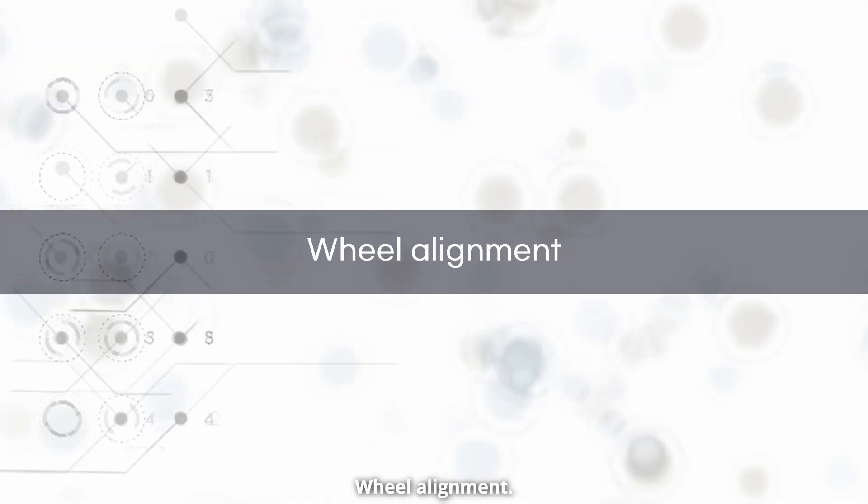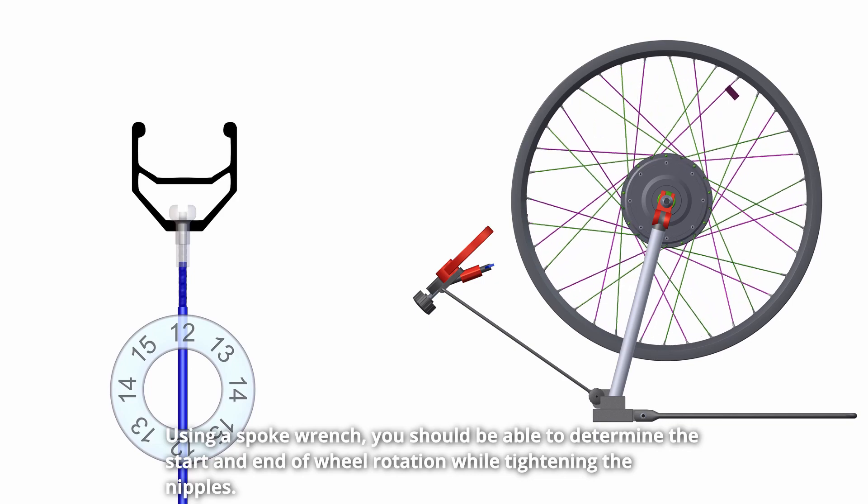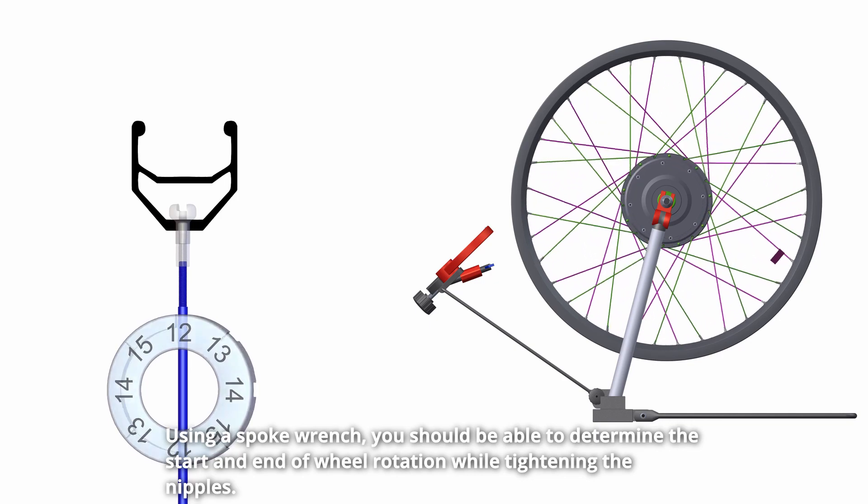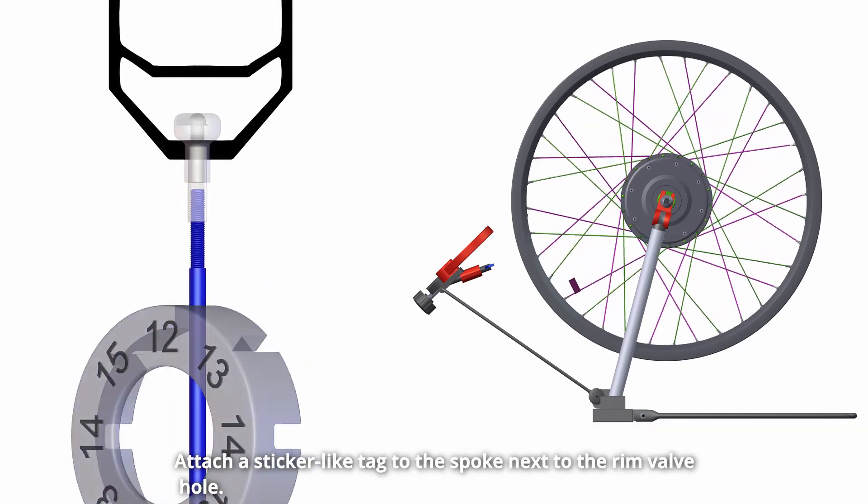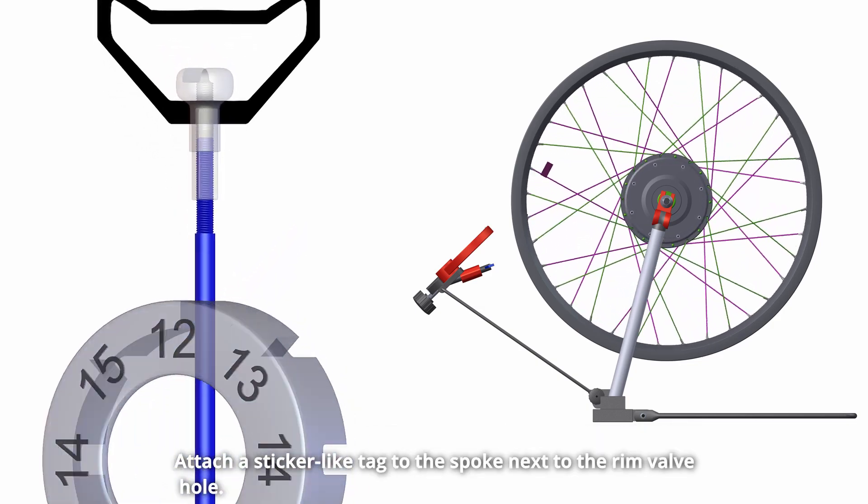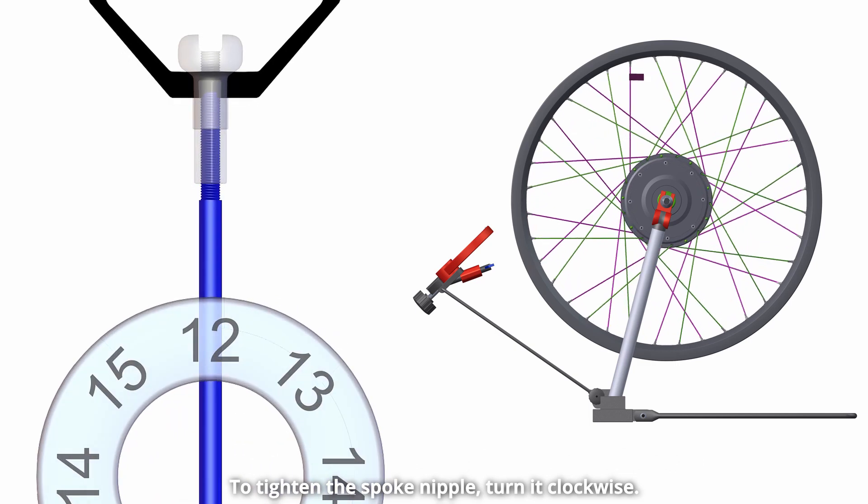Wheel alignment. Using a spoke wrench. You should be able to determine the start and end of wheel rotation while tightening the nipples. Attach a sticker-like tag to the spoke next to the rim valve hole. To tighten the spoke nipple, turn it clockwise. Tighten all the nipples while leaving a 1mm spoke thread.